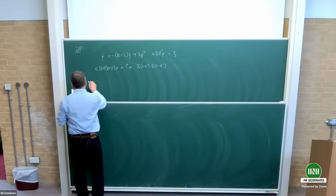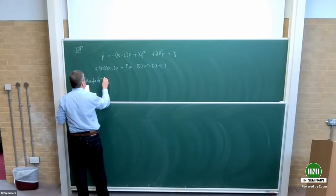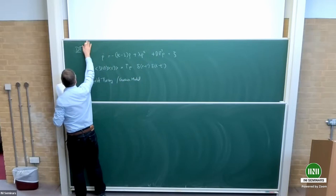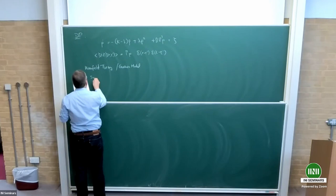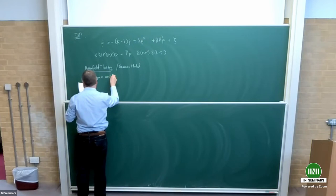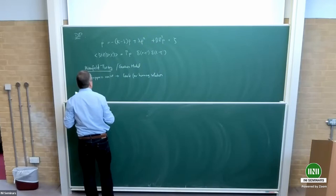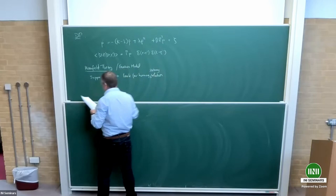So what we're going to do now is mean field theory, and then the Gaussian model. This will be the theory which is correct above four dimensions. We suppress the noise first at the mean field level — forget about the noise — and look for a homogeneous stationary solution. This is what mean field theory consists of.